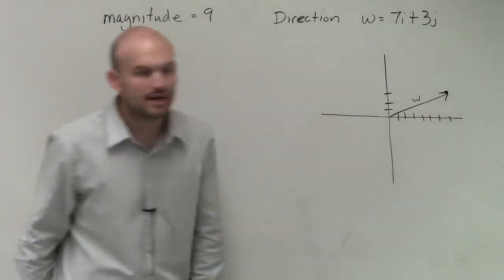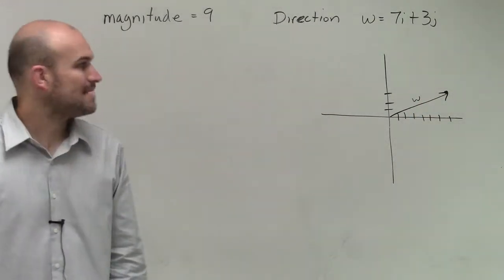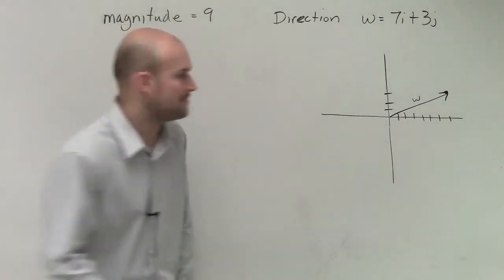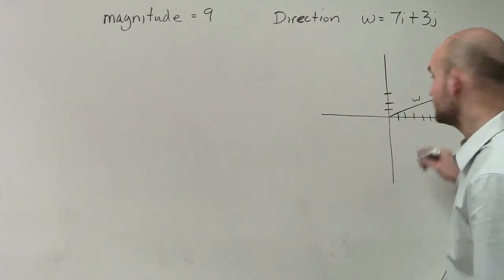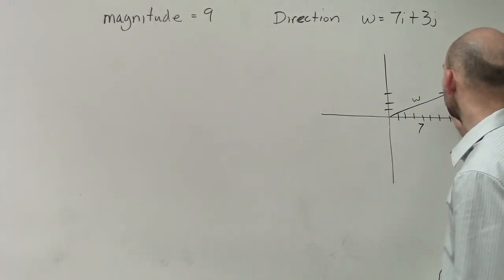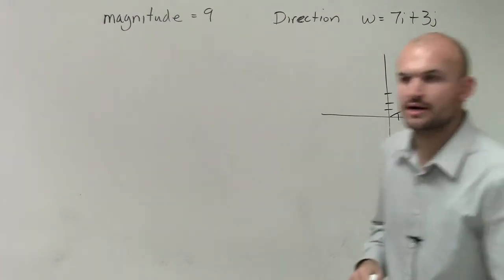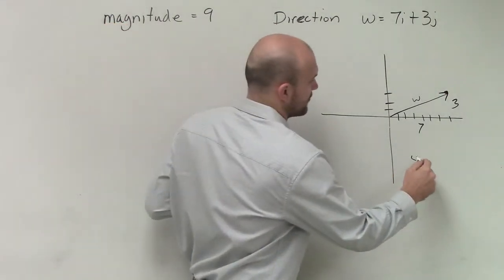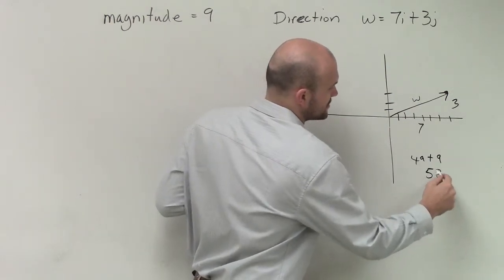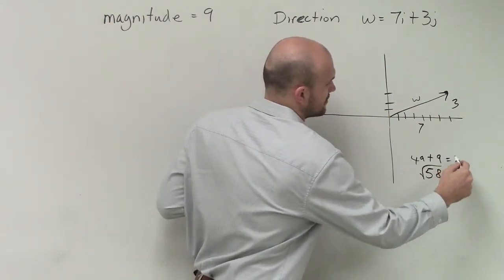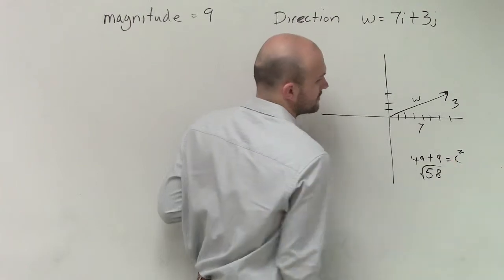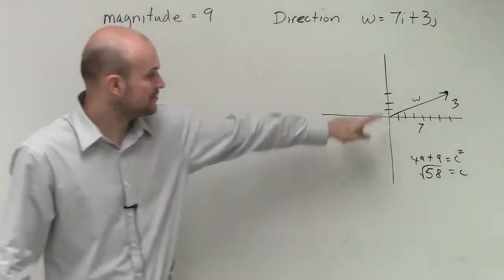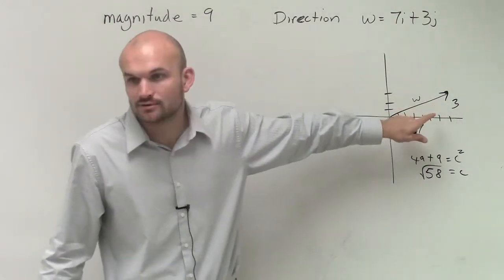Does vector w have a magnitude of 9? No. We can prove that using the Pythagorean theorem — that's 7 and that's 3. The hypotenuse is going to be the square root of 49 plus 9, which is the square root of 58. And obviously the square root of 58 is not 9, so this magnitude does not equal 9.